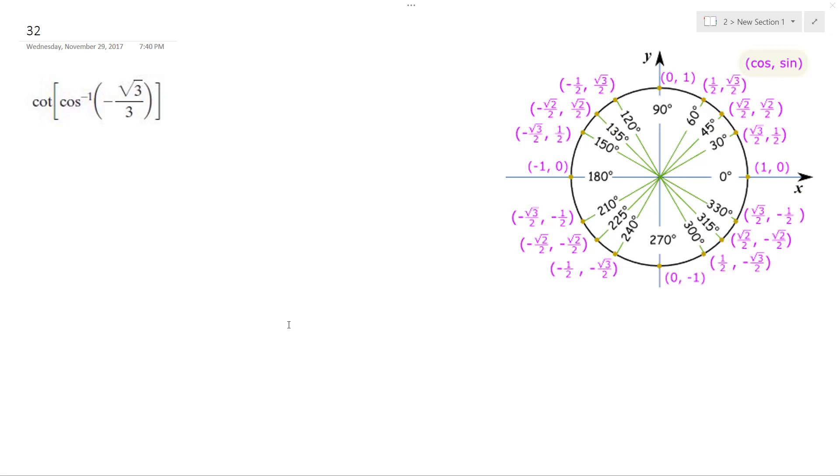All right, solving this problem: cotangent of the inverse cosine of negative square root of three over three. This is the same thing as negative one over root three, and the reason I'm mentioning that is because it'll help see this.